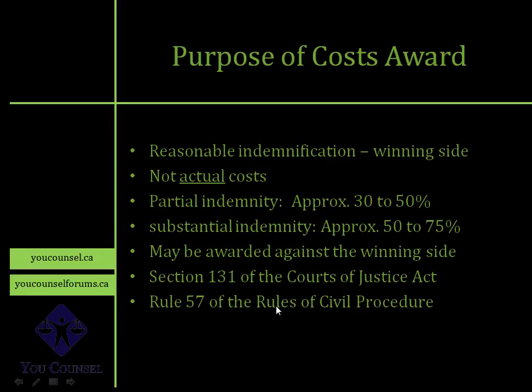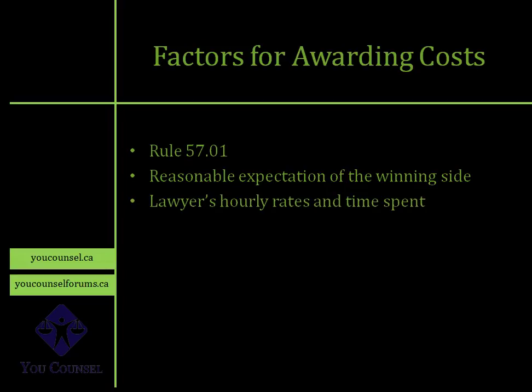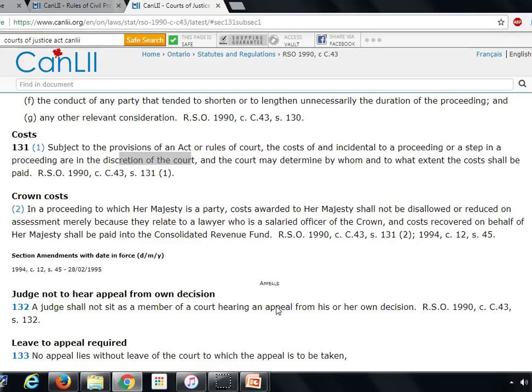Factors for awarding cost are covered in Rule 57.01. What is the reasonable expectation of the winning side? The court will consider that in terms of awarding cost. If there are lawyers involved, what was the lawyer's hourly rate and what was the amount of time the lawyer spent on the file? What was the amount claimed in that court action? What is the amount that you actually recovered? If you claimed $100,000 but recovered $10,000, then the cost award is going to be significantly different. What was the complexity of the proceeding? These are some of the factors.